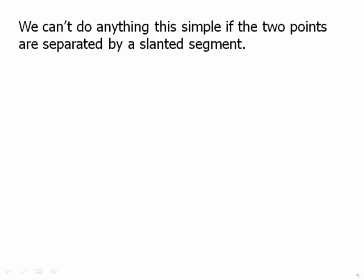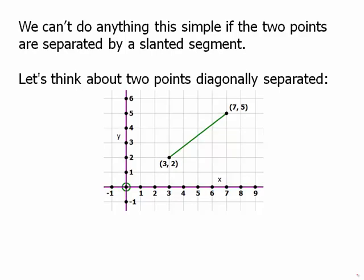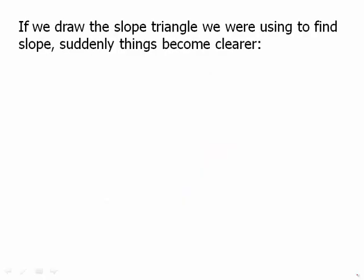We can't do anything this simple if the two points are separated by a slanted line. Let's think about two points diagonally separated. So for example, suppose we have this. We can't just do any kind of subtraction, but think about it this way. If we draw the slope triangle we were using to find slope, suddenly things become much clearer.